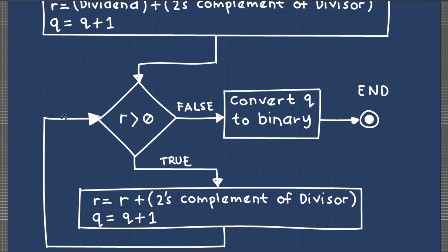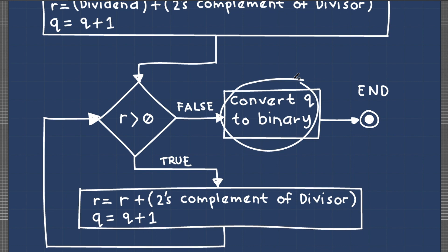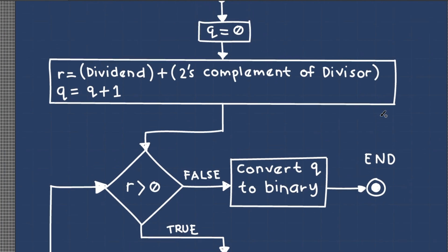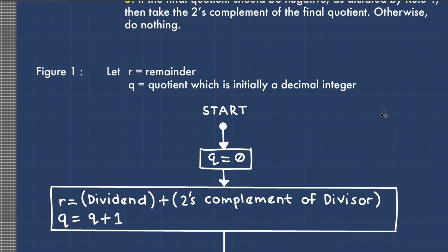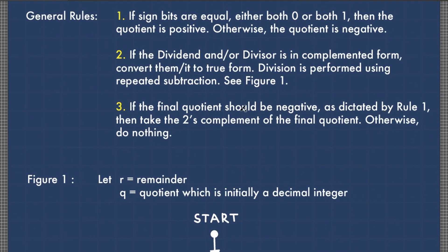Otherwise, if R is 0 or negative, then the current value of Q is our quotient. Recall that Q is initially in decimal, so we need to convert the decimal Q into a binary value — that would be our quotient. Rule 3: if the final quotient should be negative as dictated by rule 1, then take the 2's complement of the final quotient. Otherwise, do nothing.